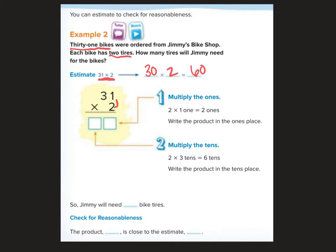Now, we're going to multiply. 2 times 1 is 2. 2 times 3 is 2 groups of 3. 3 plus 3 is 6. My answer is 62. Jimmy will need 62 bike tires. When we're checking for reasonableness, the product 62 is close to the estimate 60. Our estimate was 60, and then we know that when we multiplied, we did a good job because we're nice and close.